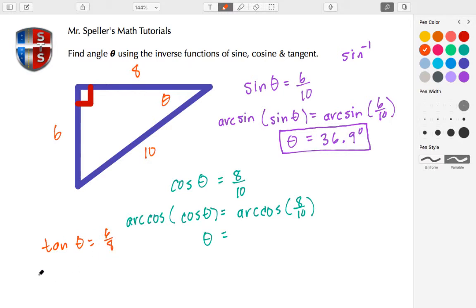Again, we take the arc tangent of both sides, so arc tan of tangent theta, and we're going to take the arc tan of six eighths. Again, these undo each other, leaving us with just theta, and we're going to take the arc tangent of six eighths.